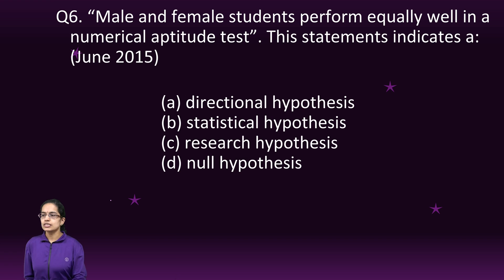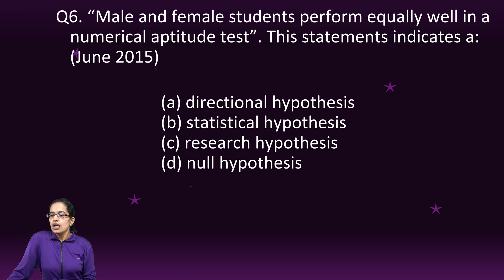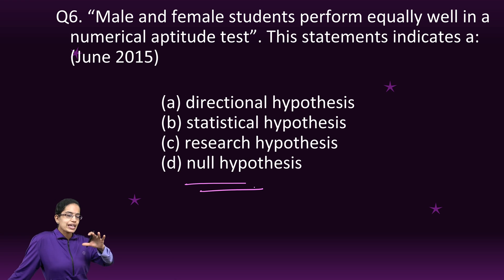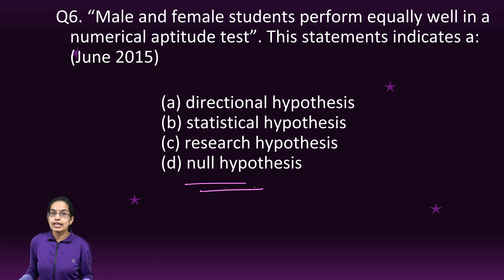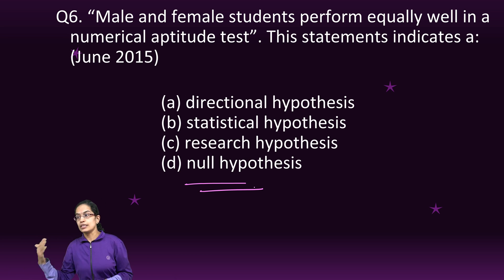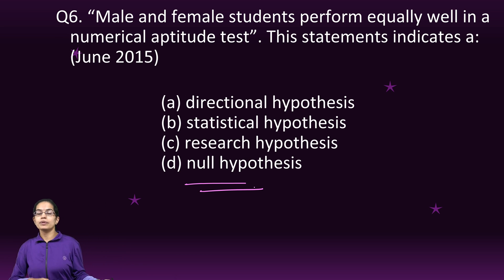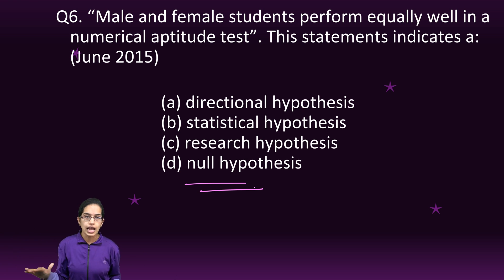The next question: male and female students perform equally well on a numerical aptitude test. This is a null hypothesis because we are not giving any specific relationship that exists between the two. We are saying they perform equally well — there is no particular relationship where men perform better than women or women perform better than men. We are putting it on a neutral base, and therefore it is a null hypothesis.